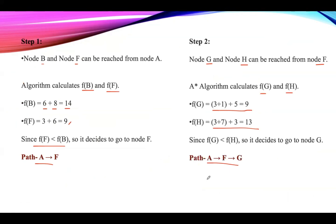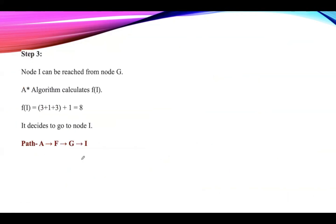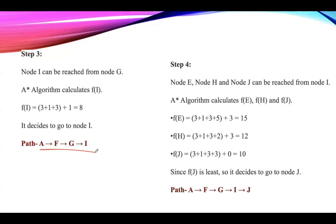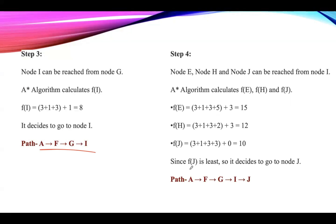Reviewing all the steps: in Step 3 we reached from node A to node I, and in Step 4 the path extended to A → F → G → I → J. The A* algorithm is one of the best pathfinding algorithms; however, its limitation is that it does not always produce the shortest path because it heavily depends on heuristics.